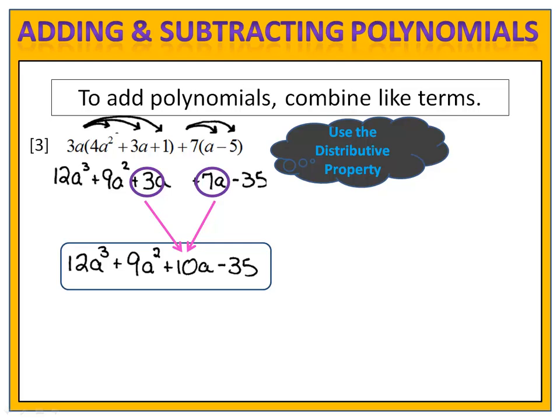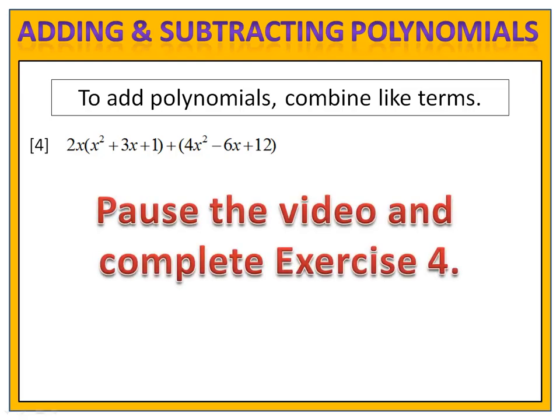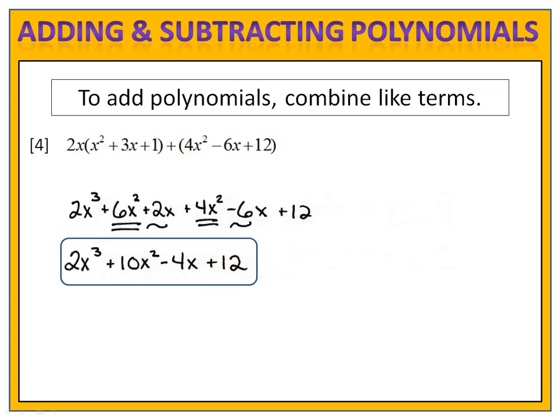The distributive property is often needed, so you should use it carefully and keep your eyes open for that. Exercise 4 is for you to try. In this exercise, we see that we need to use the distributive property in the first polynomial. Please pause the video here and complete exercise 4. When we distribute the 2x, we get 2x to the third plus 6x squared plus 2x. We combine like terms and end up with 2x to the third plus 10x squared minus 4x plus 12.